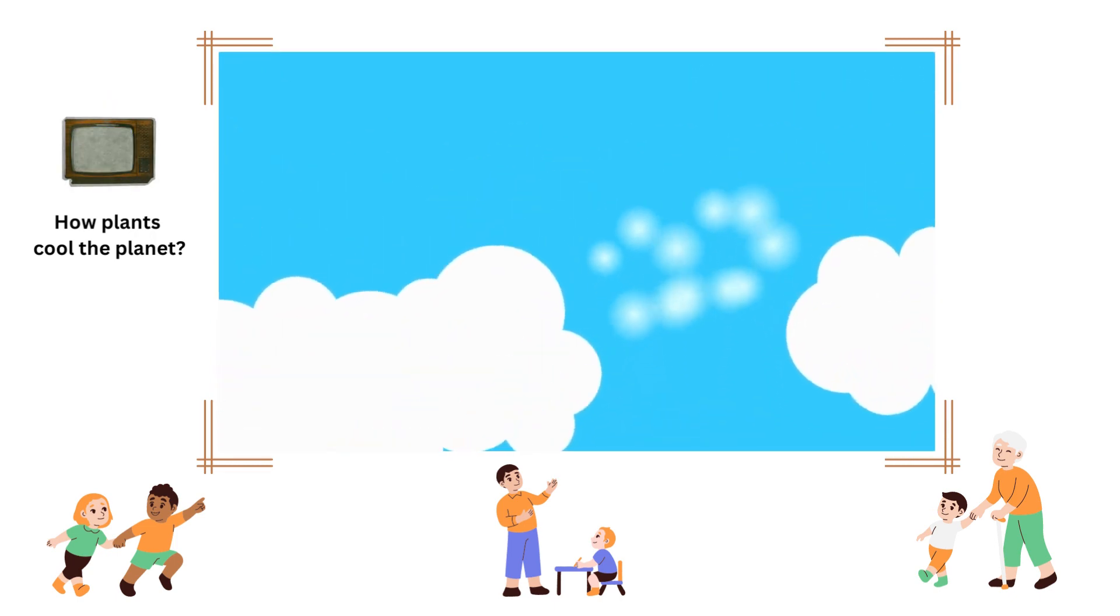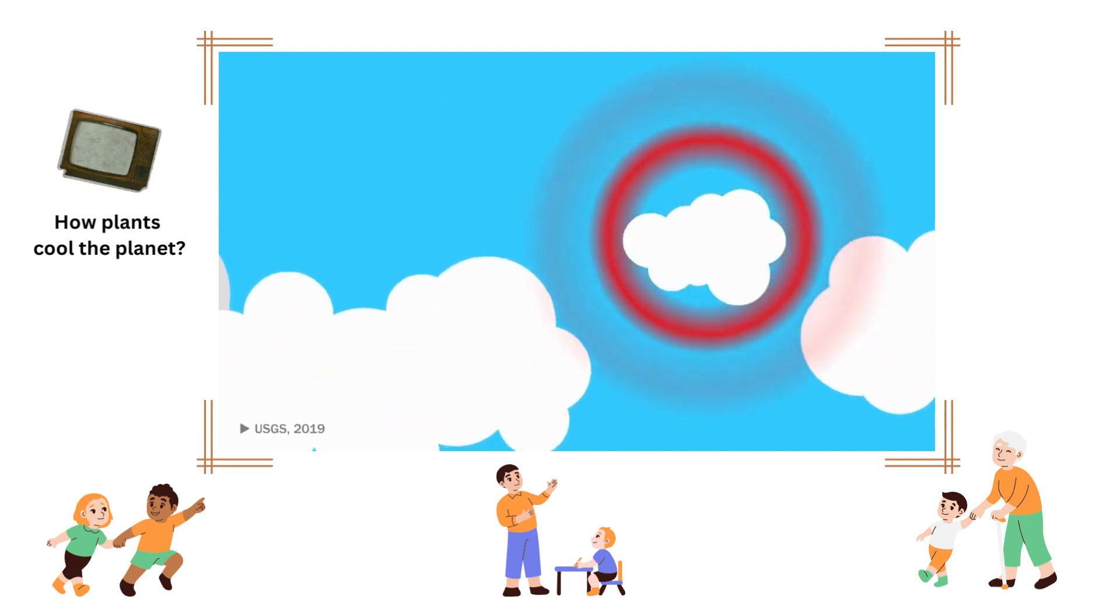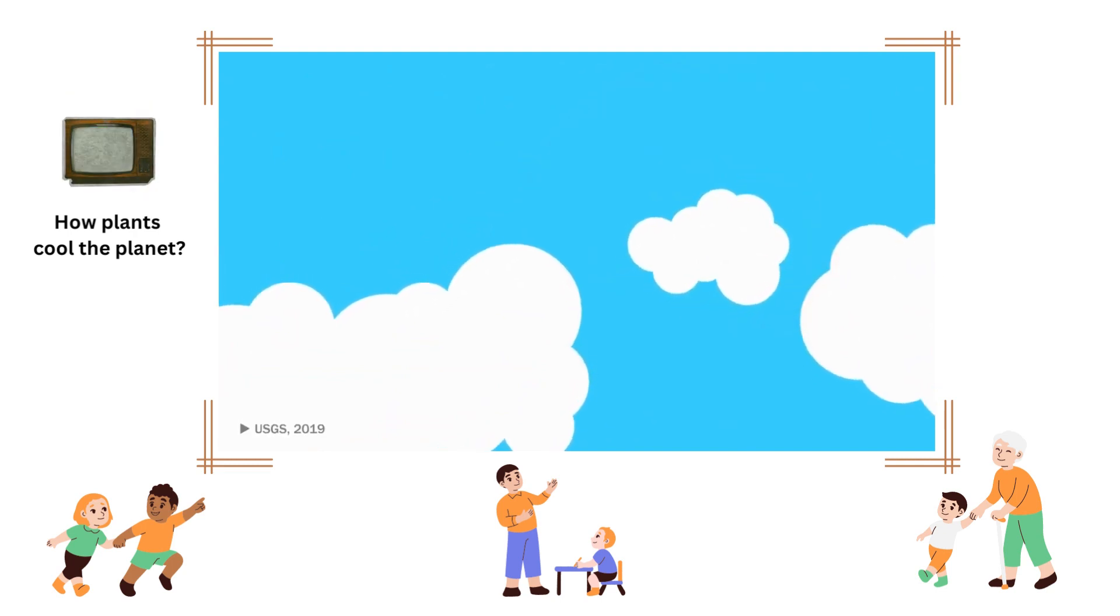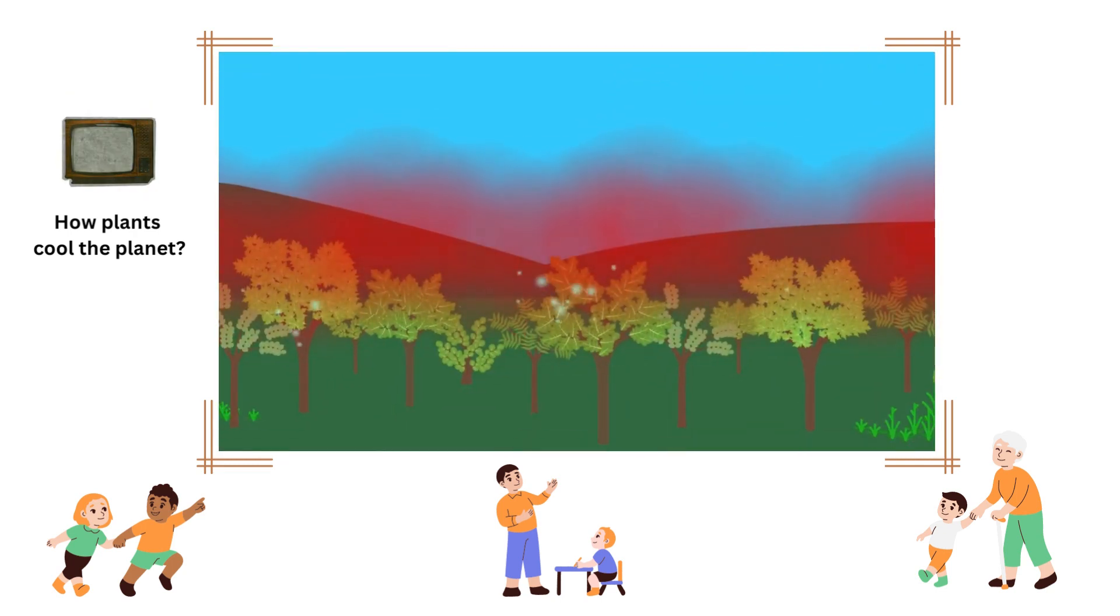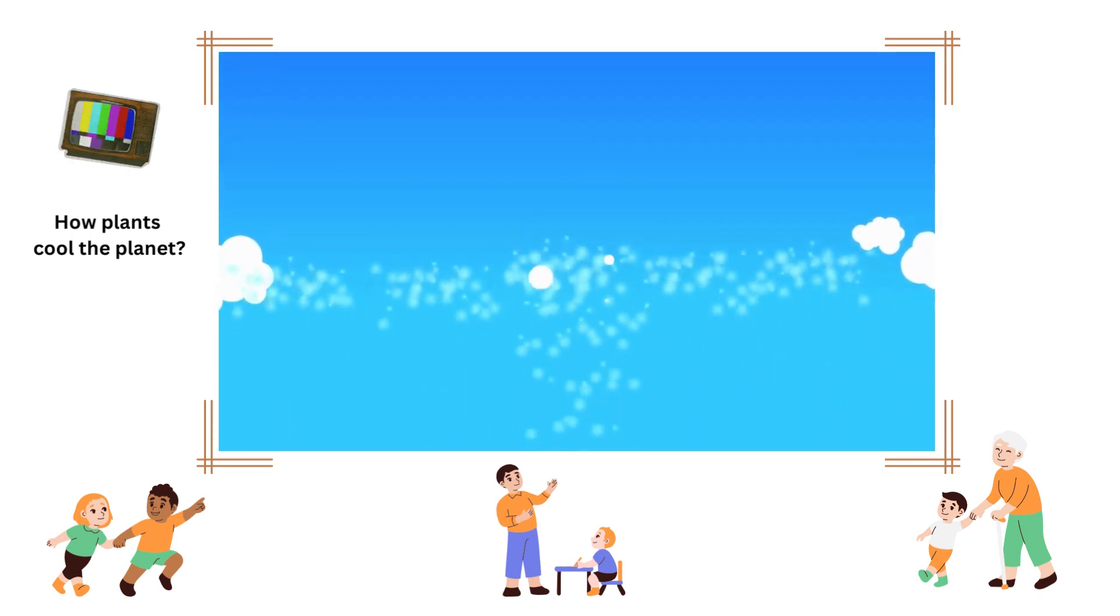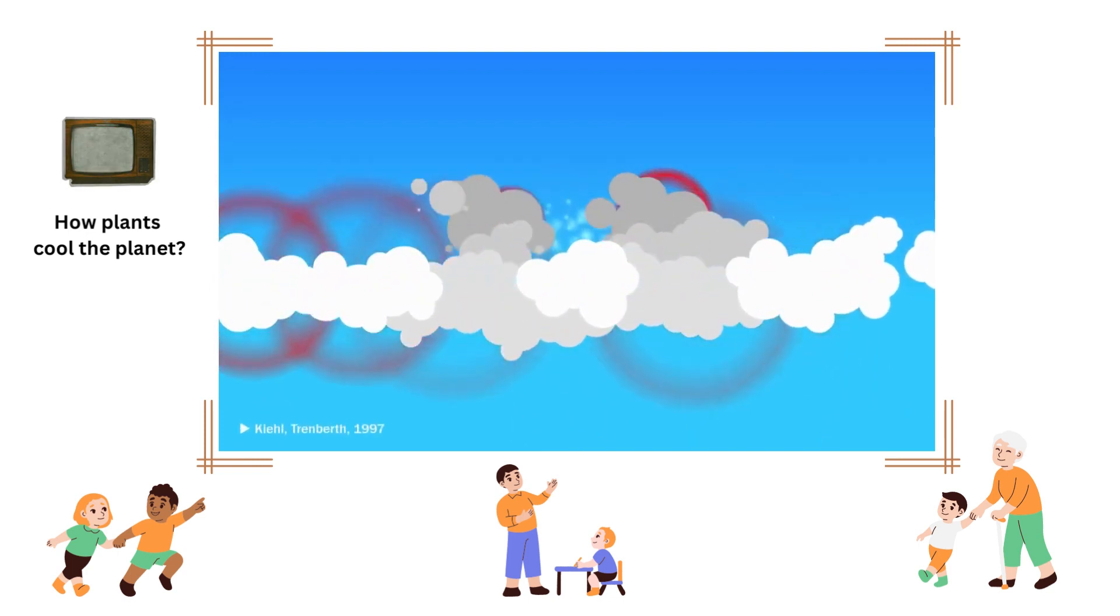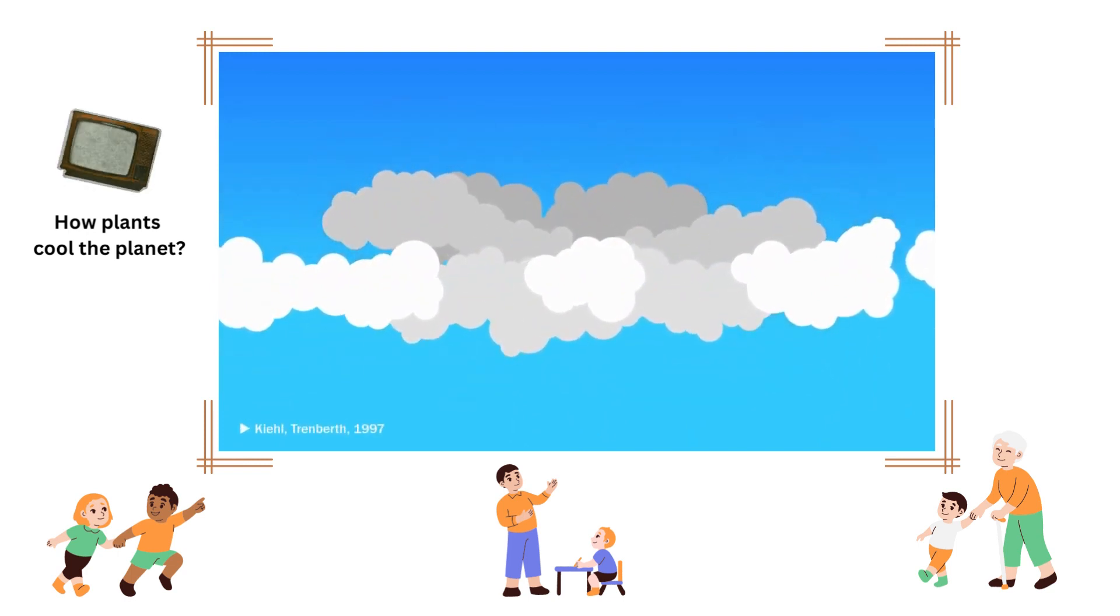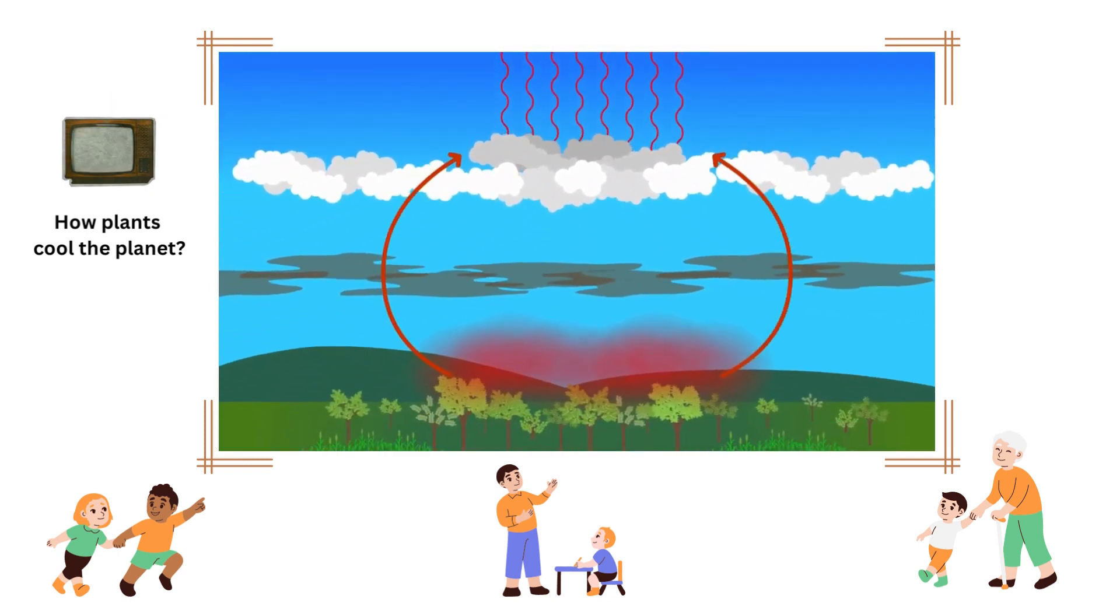When the water condenses at cloud level, it releases the heat that it absorbed during evaporation. Therefore, transpiration moves heat from the ground level, where it would have been trapped by greenhouse gases, up to high altitudes, where a lot of it, as much as half according to some experts, radiates back into space. Heat exits the earth, and the earth cools down.